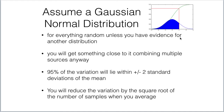We're always going to assume a Gaussian normal distribution for our errors in this course. In other courses, we might look for evidence for another distribution, but we'll stick with Gaussians here — and you'll get something close to it by combining multiple sources anyway. Remember, 95% of the variation in a Gaussian distribution will lie within plus or minus two standard deviations.